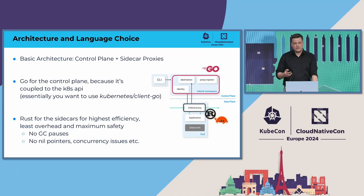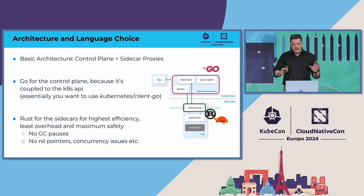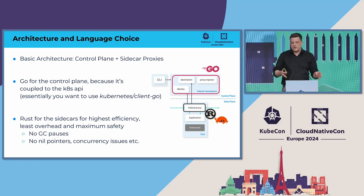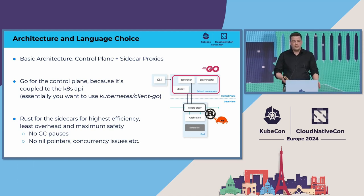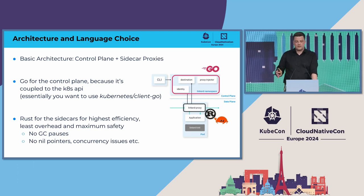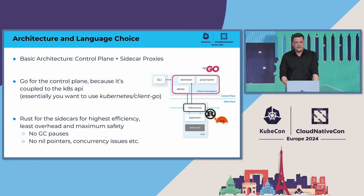That brings us to how the architecture looked. It's a very traditional architecture: you have the control plane and you have sidecar proxies. There's a debate about sidecar proxies versus centralized ones, but that's not what this is about. The question was: how do you implement a control plane? Traditionally, you do that with Golang — you use Kubernetes client-go, which is a very mature ecosystem with lots of support. Nothing wrong with that.